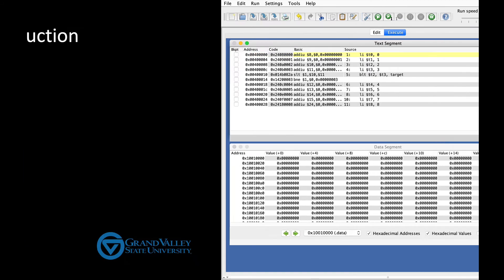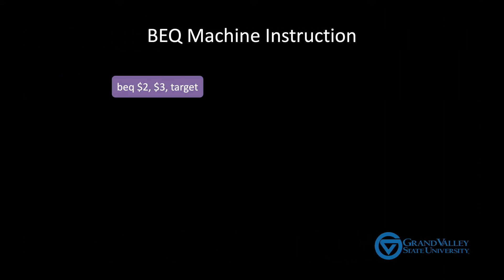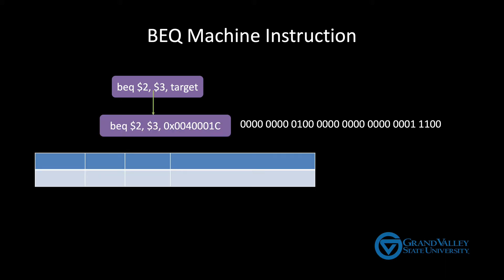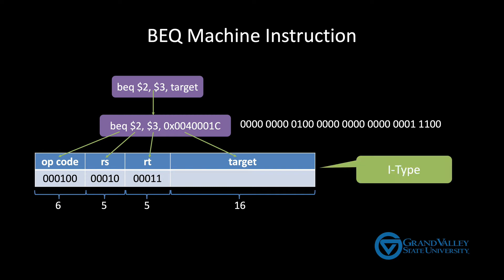So let's look at the branch if equal machine instruction. As with our sample jump, let's assume the label target refers to this address. This machine instruction requires an opcode, two registers, and a target address. The opcode and two registers take up 16 bits, leaving 16 for the target address. Notice that this is the same pattern as the add-i, and-i, or-i, and so on. Therefore, like those instructions, it's considered an I-type instruction.